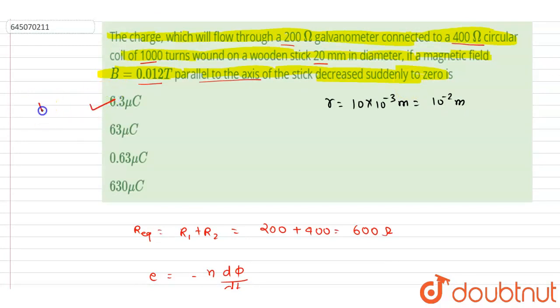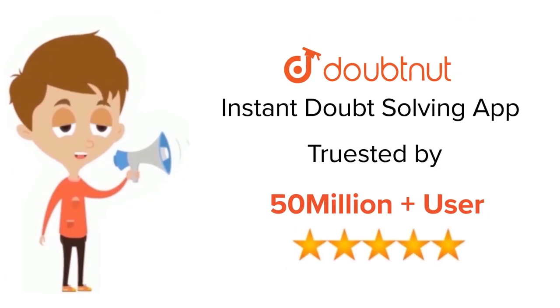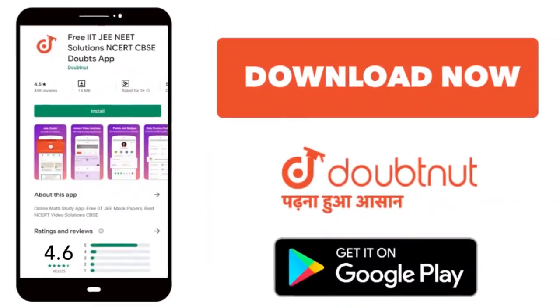6.3 micro coulomb is the correct one. A is the option. Thank you! For class 6 to 12th, IIT and NEET level, trusted by more than 5 crore students, download Doubtnut app today.